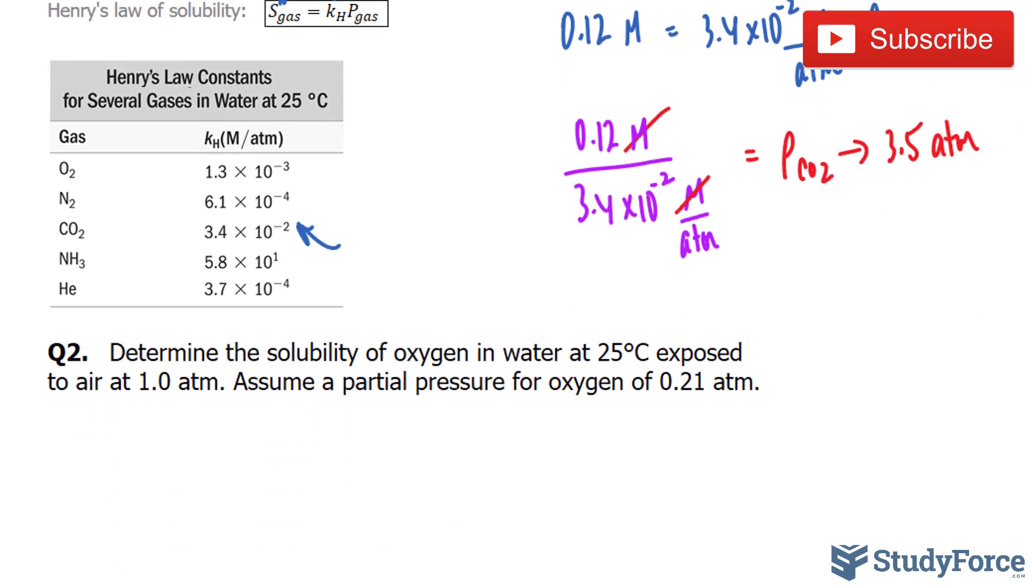Let's move on now to question number 2. Determine the solubility of oxygen in water at 25 degrees exposed to air at 1 atmosphere. Assume a partial pressure of oxygen at 0.21. So this time they give us the pressure of oxygen,